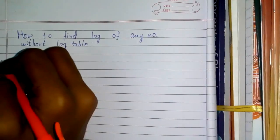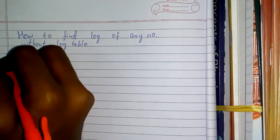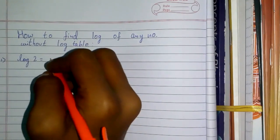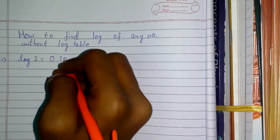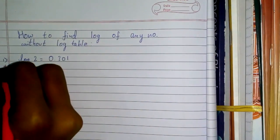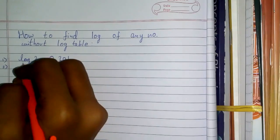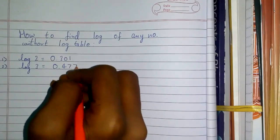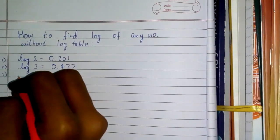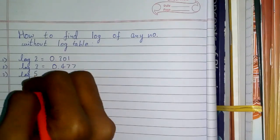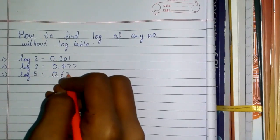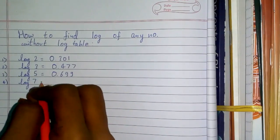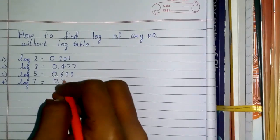First, you need to remember these basic values of log: log 2 equals 0.301, log 3 is 0.477, log 5 is 0.699, and log 7 is 0.845.